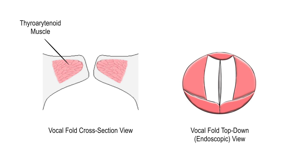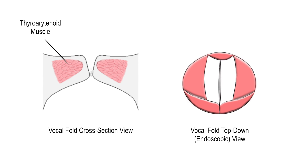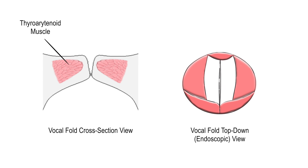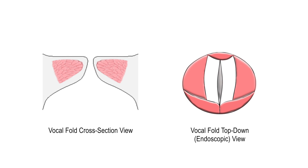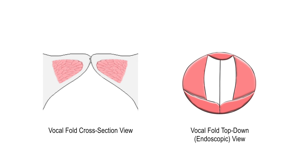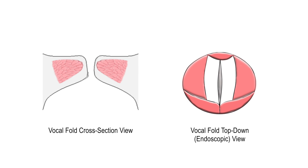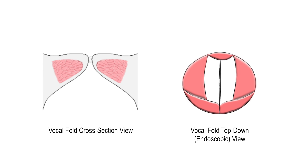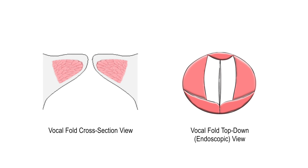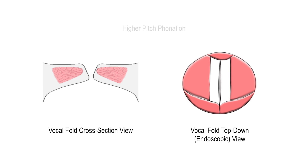Please keep in mind that the prior animation was exaggerated for clarity. In reality, the thyroarytenoid muscle does not move during vocal fold vibration, as shown in this simpler animation. Note how the vocal fold membrane moves freely over the muscle. As the pitch increases, the vocal fold vibration speeds up as well as narrows together.